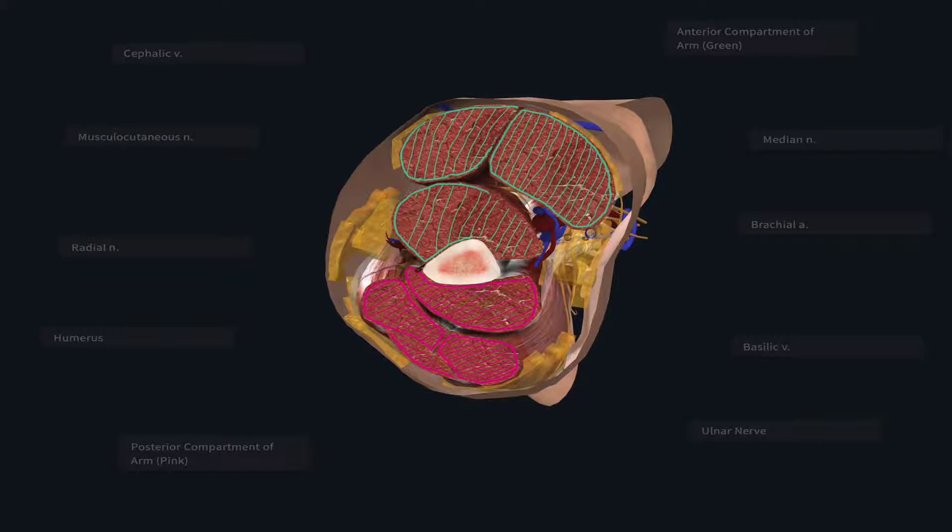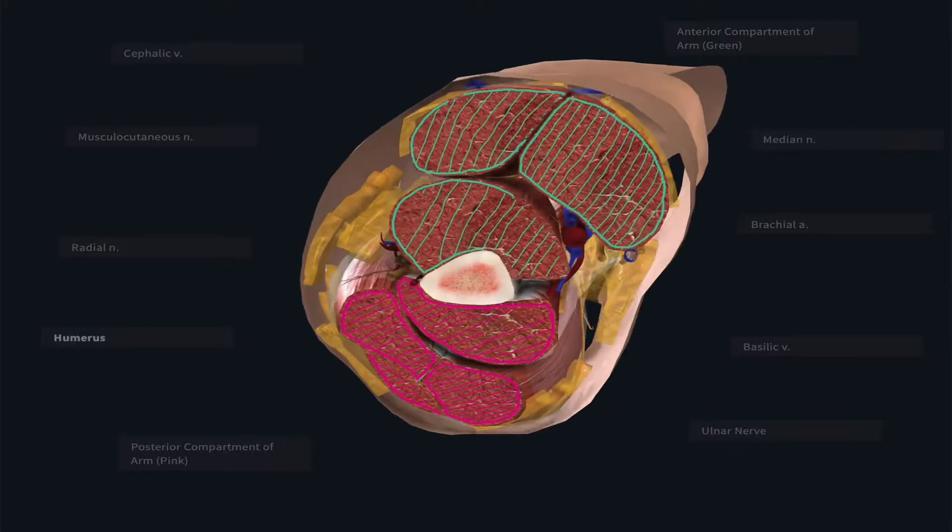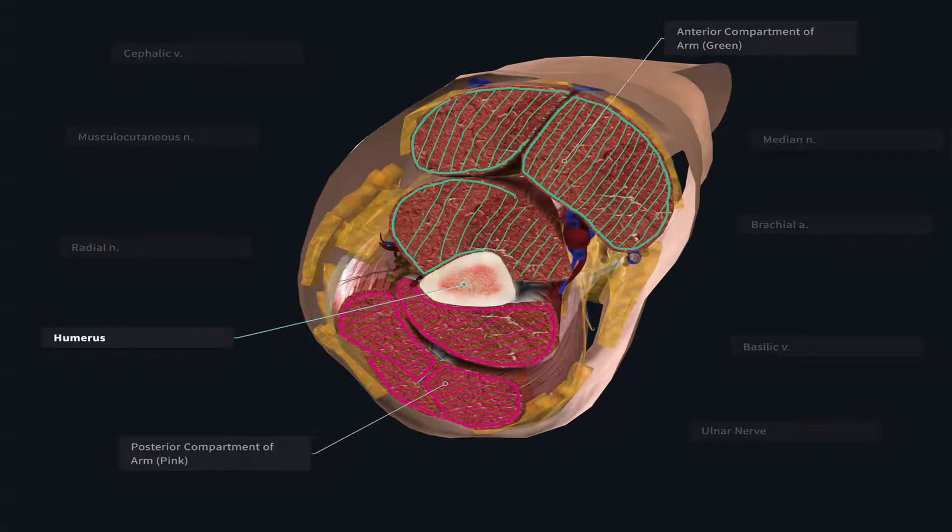The first thing to look at with the cross-sectional cut of the arm is that this is essentially a round structure. So that will be an indication that we're looking at a cross-sectional cut somewhere in one of the limbs. The next thing to identify is if there's one bone or two bones within this region. In this case, we have one centrally located bone, which is going to be the humerus.